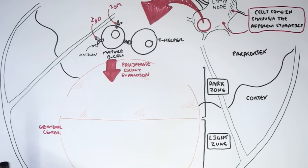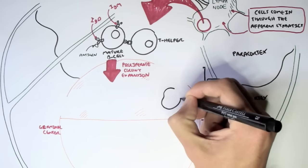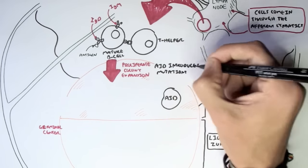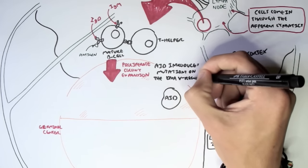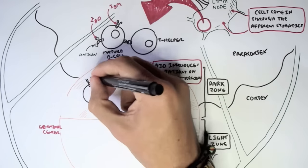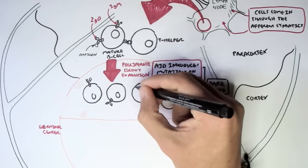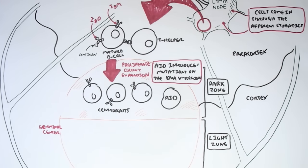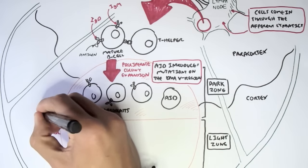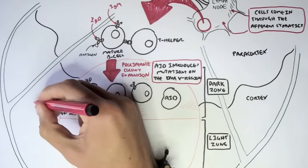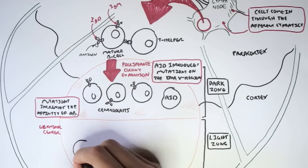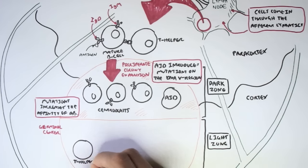It is thought that when the mature B cell proliferates into cells called centroblasts, an intracellular enzyme called AID will introduce point mutations on the variable region of the DNA — the region that encodes for the variable region of the antibody. This process, known as hypermutation, will change the antibody, increasing or decreasing its affinity and specificity. Through proliferation and hypermutation, many types of centroblasts are created, with either increased or decreased affinity for the particular antigen that stimulated activation.